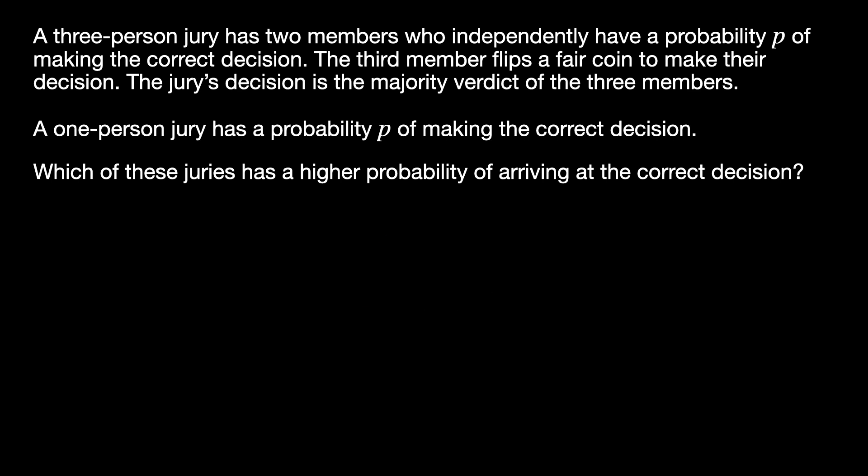In this problem, we have to compare two separate probabilities: the probability that the three-person jury makes a correct decision and the probability that a one-person jury makes the correct decision. We can notice that we already know this second probability. The probability that a one-person jury makes the correct decision is simply P. Thus, all we have to do is find the probability that the three-person jury is correct.